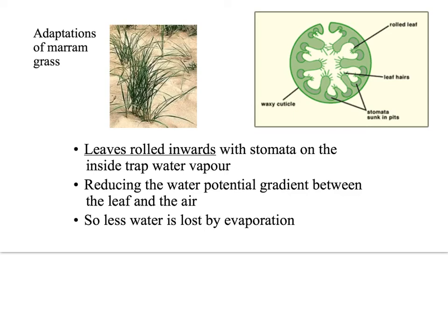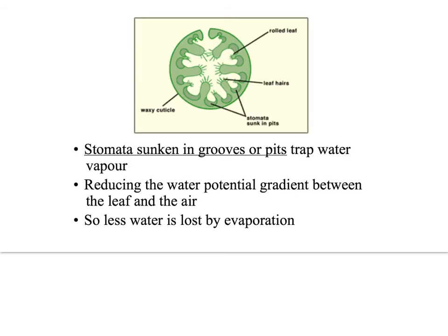Marram grass is a popular xerophyte commonly asked about in exams. It lives on sand dunes, where sand does not retain water well because rainfall drains straight through. Also, sea spray is very salty, so salty water is not easily taken up by osmosis. Marram grass has several adaptations to reduce water loss. Its long, thin grass leaves are rolled inwards with stomata on the inside, trapping water vapour and reducing the water potential gradient between the leaf and the air, meaning less water is lost by evaporation. Looking inside the leaf, the stomata are sunken in grooves or pits, which traps even more water vapour and further reduces the water potential gradient, meaning less water is lost by evaporation.